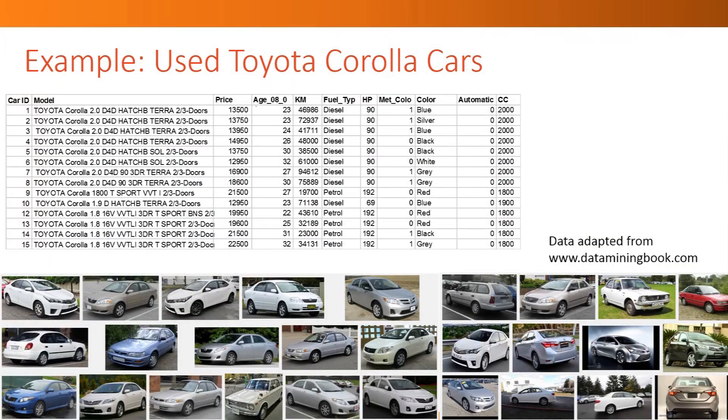Here is an example. Suppose that we have a sample of used Toyota Corolla cars. For each car, we have the price it's sold for, which is our outcome variable of interest. We also have information on different features of the car, such as its mileage, its color, the type of fuel it uses, and more. The car features will be our independent variables.